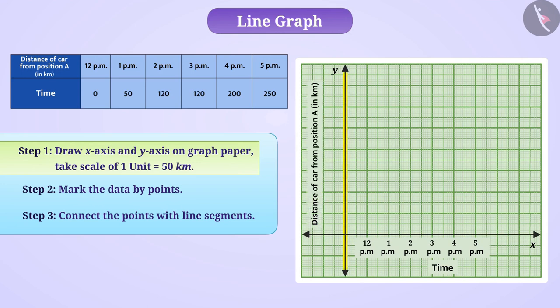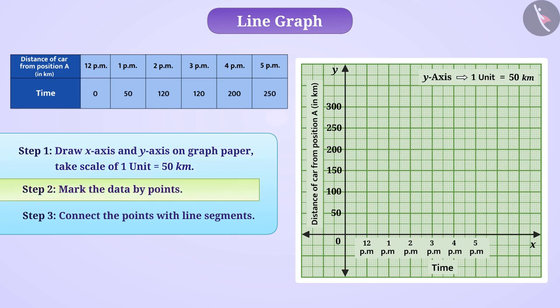To show this distance, we will take 1 unit is equal to 50 kilometers as a scale on the vertical line. Now, we will mark the data by points.